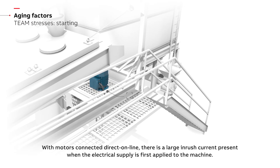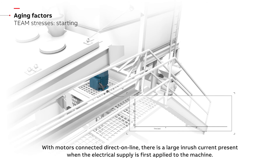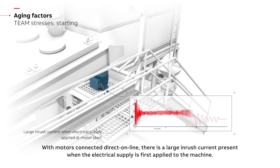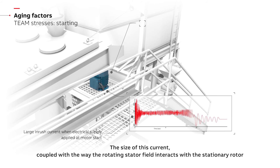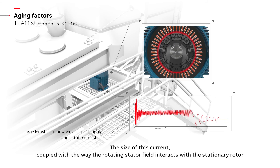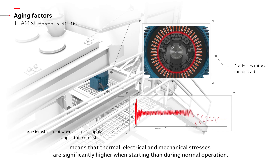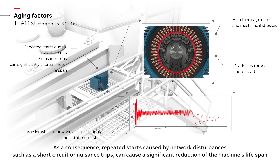With motors connected direct online, there is a large inrush current present when the electrical supply is first applied to the machine. The size of this current, coupled with the way the rotating stator field interacts with the stationary rotor, means that thermal, electrical, and mechanical stresses are significantly higher when starting than during normal operation. As a consequence, repeated starts caused by network disturbances such as a short circuit or nuisance trips can cause a significant reduction of the machine's lifespan.